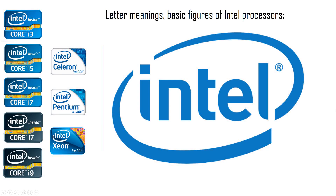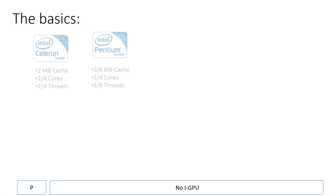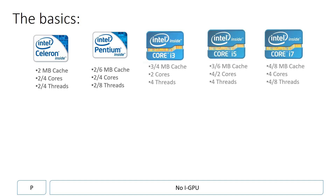This video explains the basics of Intel processor letter meanings, the basic figures of the processors, and what the actual letters mean. P stands for no integrated GPU. Here you have an Intel Pentium and a Celeron. The Celeron has a 2 megabyte cache, 2 to 4 cores, and 2 to 4 threads, while a Pentium has 2 to 6 megabyte cache, 2 to 4 cores, and 2 to 8 threads.